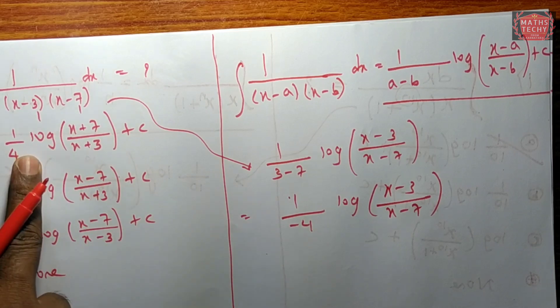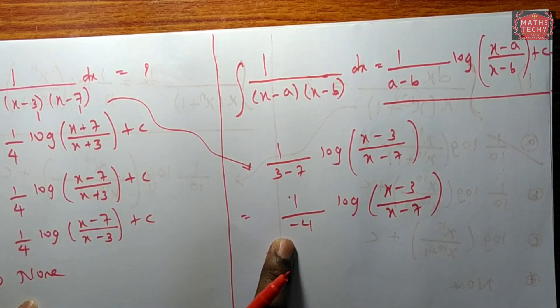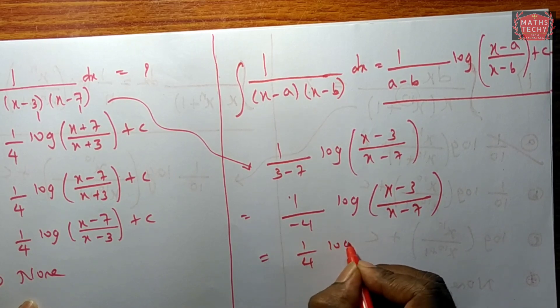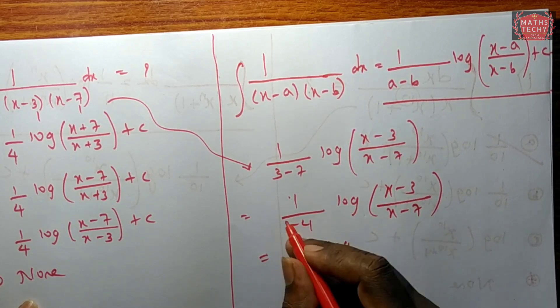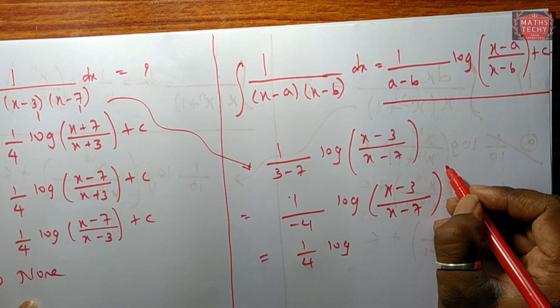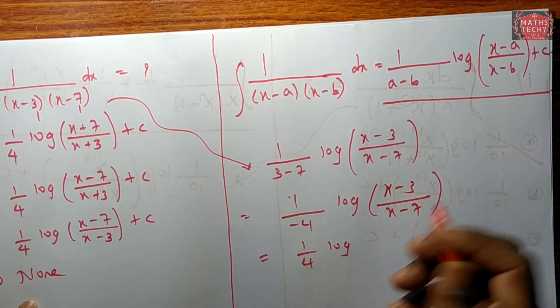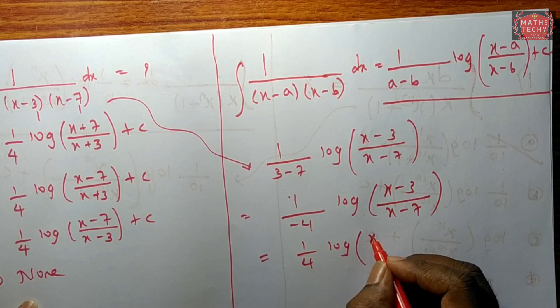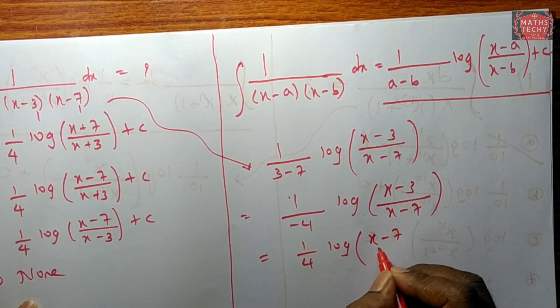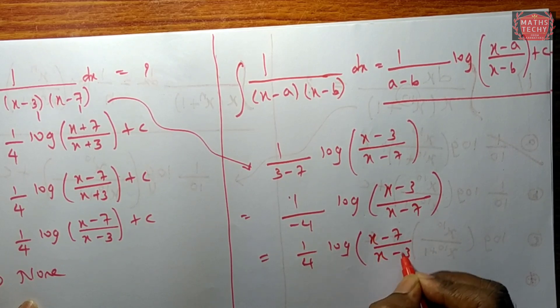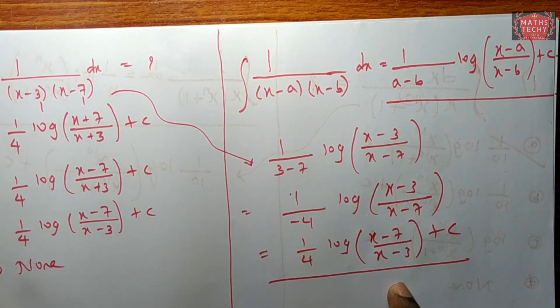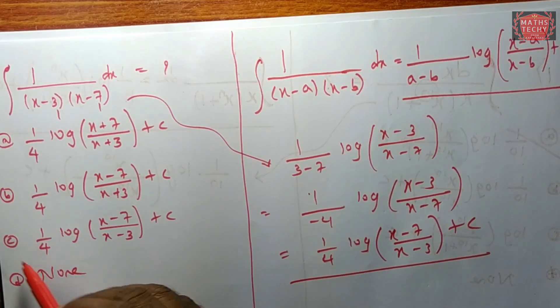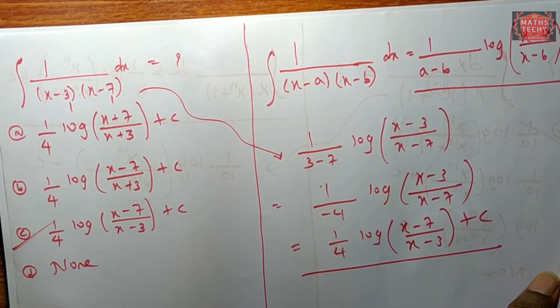Here in the option there is minus and plus change. 1 by 4 minus of this. Here is minus power, power of minus 1, reverse, reciprocal. Minus plus log reciprocal: x minus 7 dividing by x minus 3.